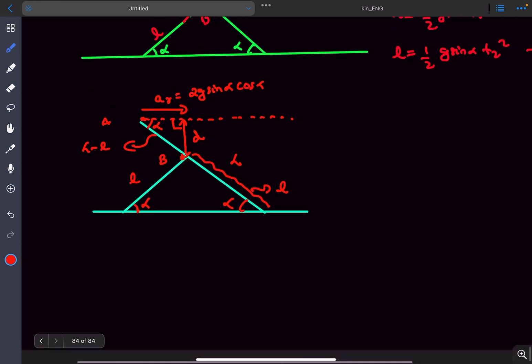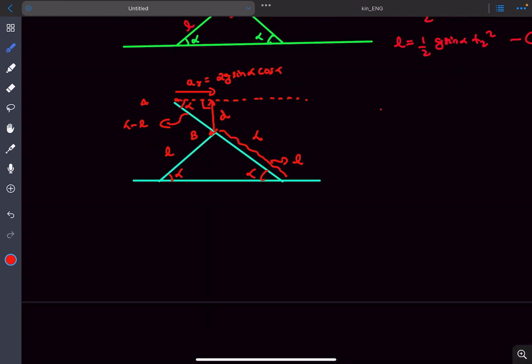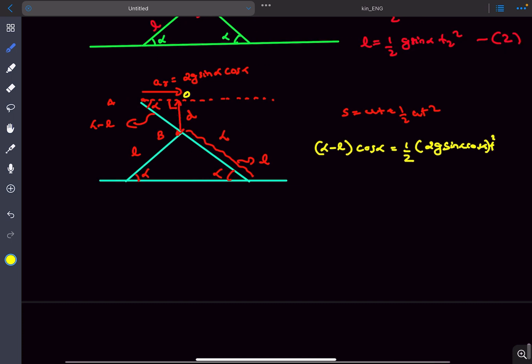Now we're going to be using s equals ut plus half a t squared again. Let's term this point O. The distance A to O is going to be capital L minus small l times cos alpha. This must equal u is 0, half acceleration is 2g sin alpha cos alpha times t squared. We have to find t.